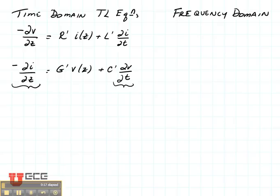What we're going to do now is convert these two equations from the time domain to the frequency domain. We're going to use the assumption that the voltage and current are equal to some magnitude times the cosine of omega t plus some phase.